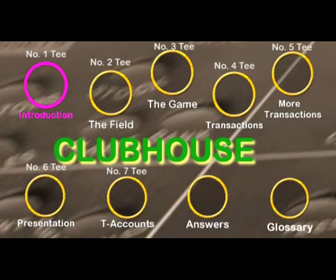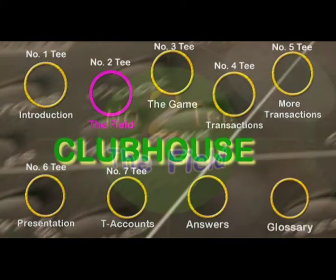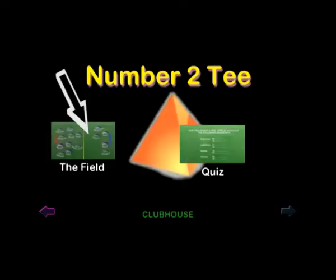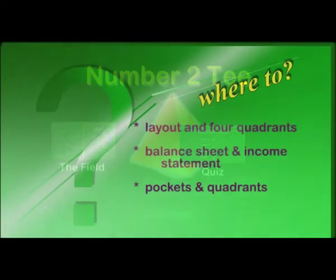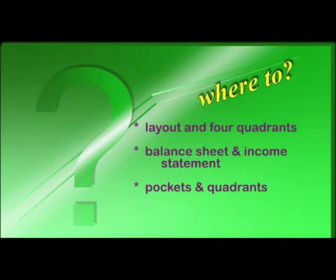Back to the clubhouse and let's now select T number 2, the field. From this T you will investigate the field's layout and the four quadrants it is divided into. You will be introduced to the concept of an income statement and balance sheet and how the various pockets fit into each quadrant.